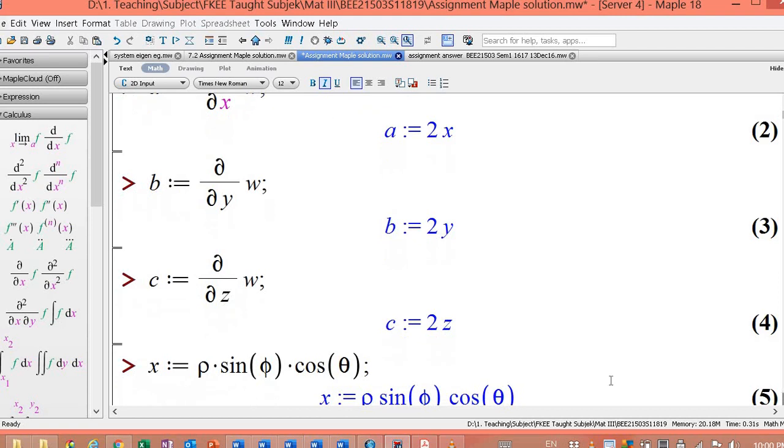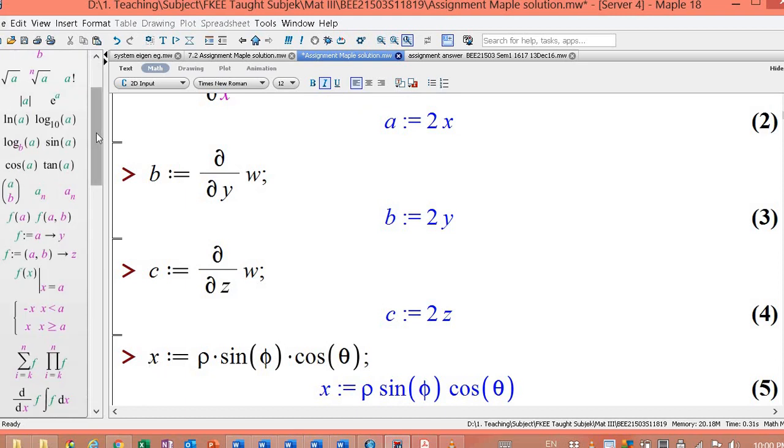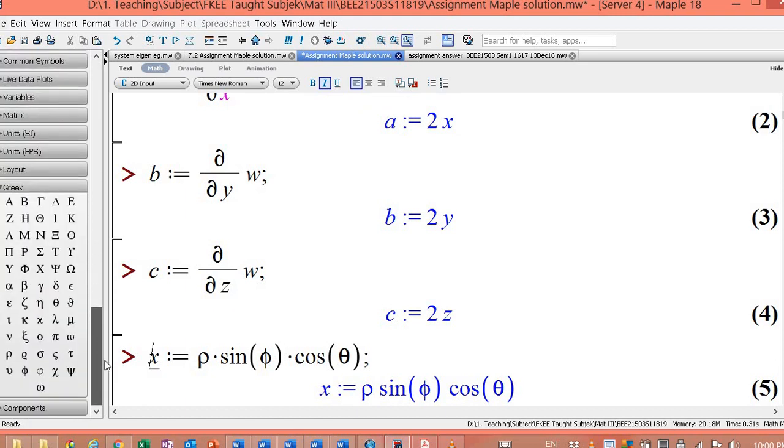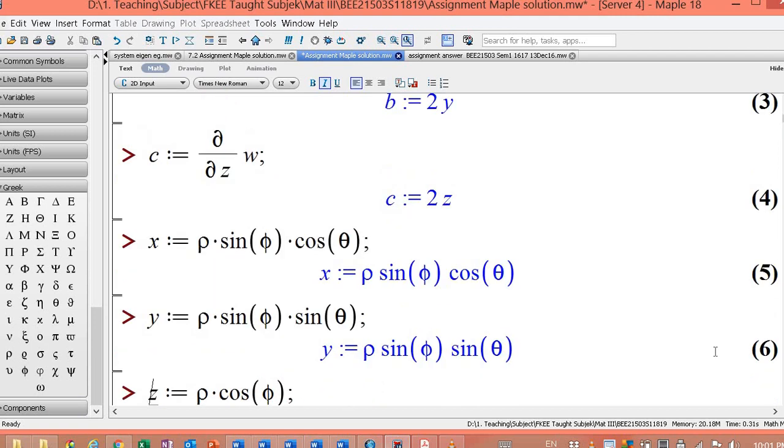Okay, now I define x is actually rho. I'll get the symbol rho. You can go to the Greek symbol. This is rho. X, colon equal rho. For multiplication, make sure you press the multiplication sign. Rho multiply sin phi. Phi, you can find it under the Greek button. Sin phi multiply cos theta. Theta is here. So y is rho sin phi sin theta. Z is rho cos phi.